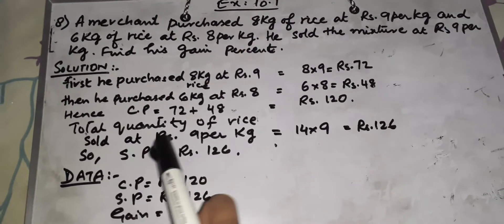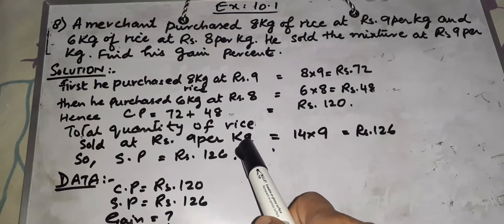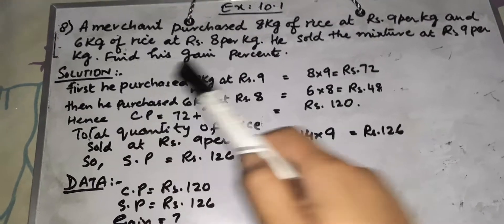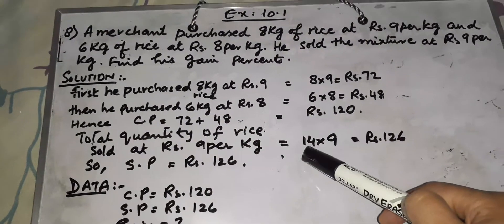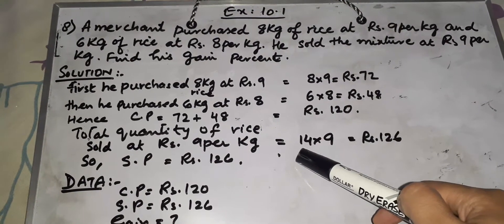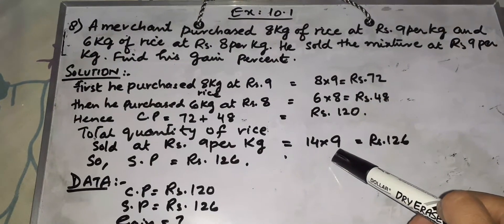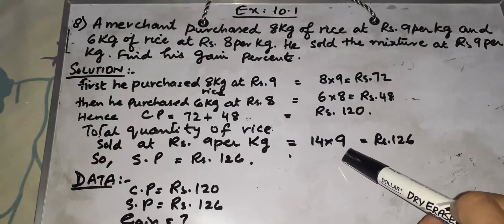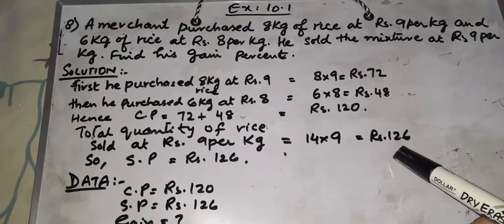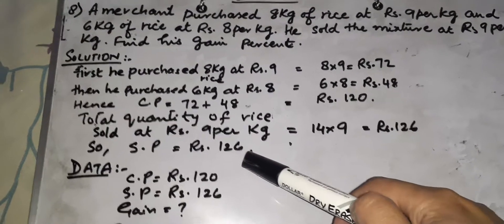Now the total quantity of rice is 14 kg, sold at Rs. 9 per kg. To get the selling price, multiply 14 × Rs. 9, which equals Rs. 126.